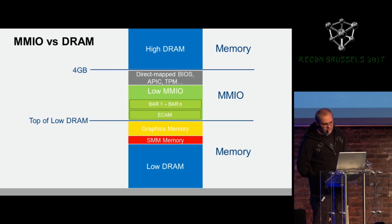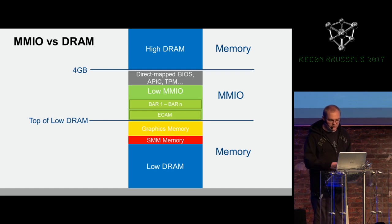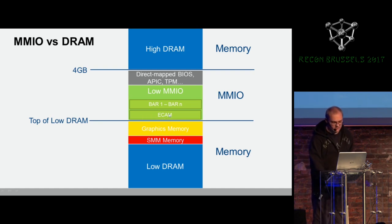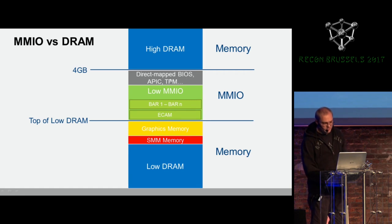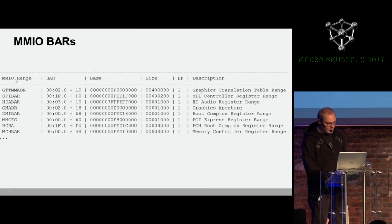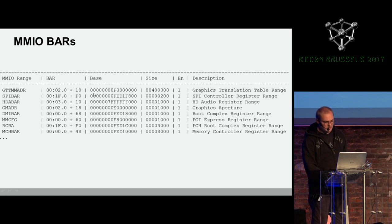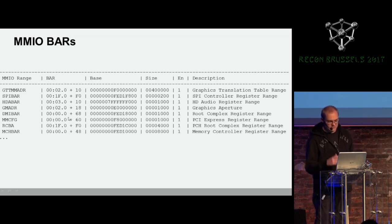Here is a simplified version of the memory layout. We have low DRAM, then SMM protected by SMRAM, then graphic memory, then TOLUT, then memory map config, then low DRAM with all the BARs defined through PCI config space, and a direct map in BIOS, and then high DRAM. So all of the BARs should be defined somewhere in the MMIO region. You can use the chipset tool to run the MMIO list and enumerate the known PCI MMIO BARs.